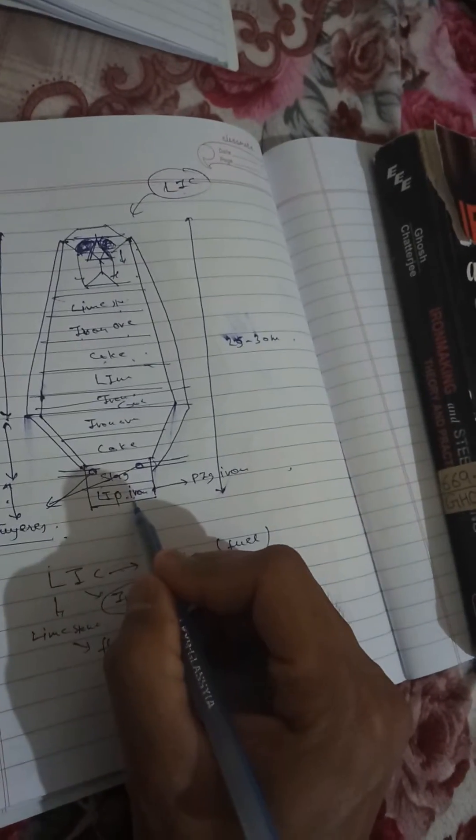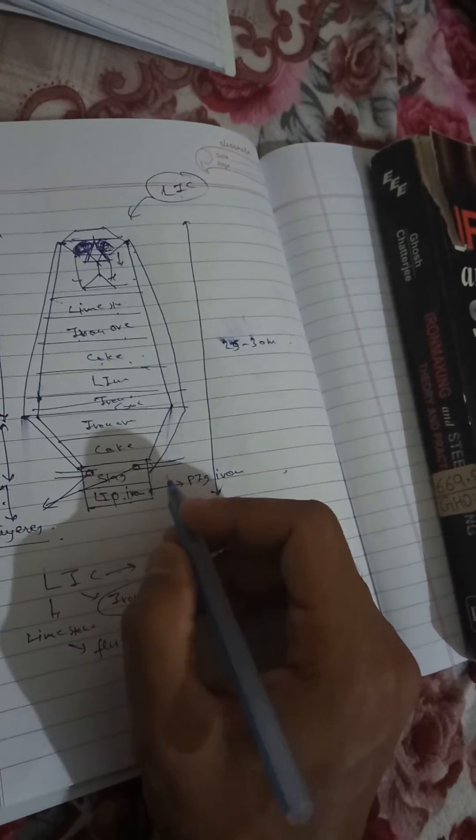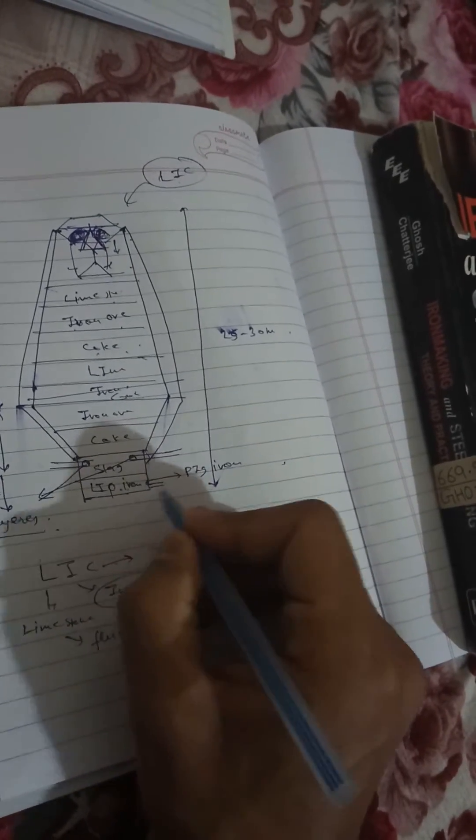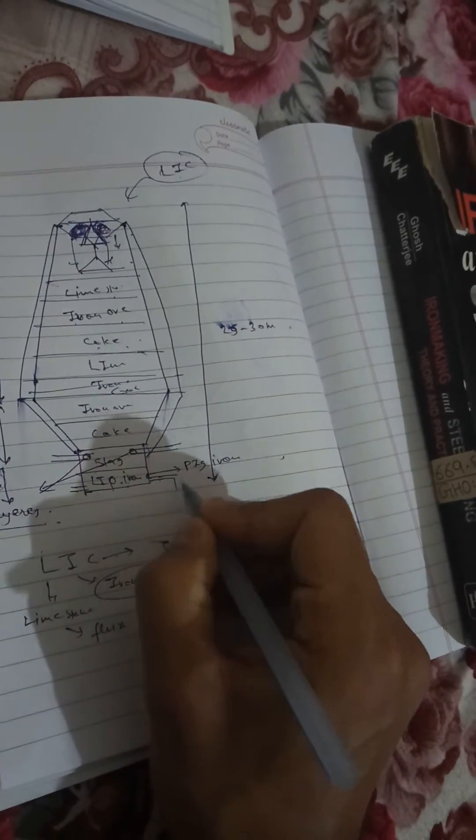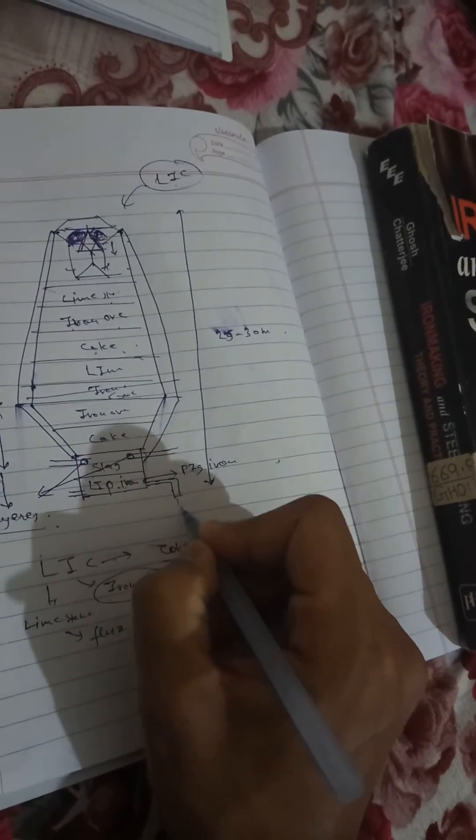To separate liquid iron or pig iron, we have an opening in the bottom of the hearth, so we can separate the pig iron.